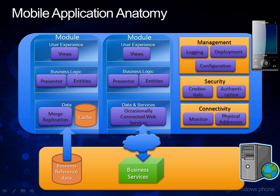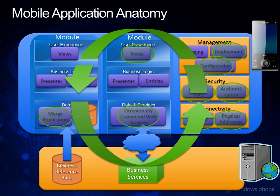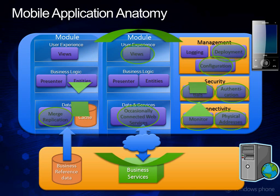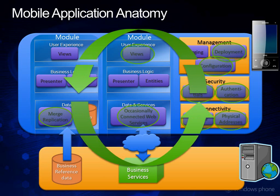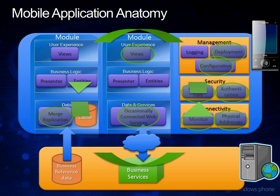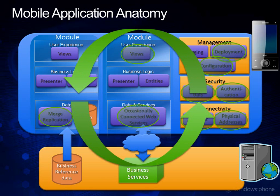The mobile application blocks are covering most of those areas. We are covering management, security, connectivity, data and services, data persistence, and synchronization. We are also covering user experience, in this case relying on the community edition of third-party products like the Clarius Orientation Aware Control and the Resco Mobile Forms Toolkit.